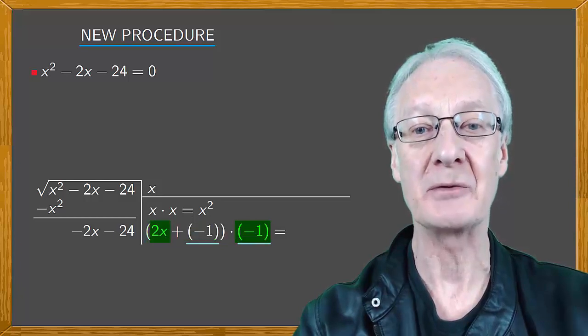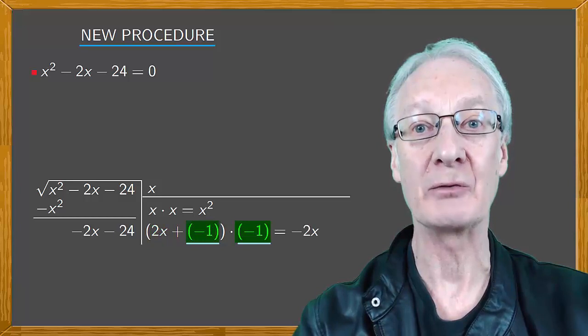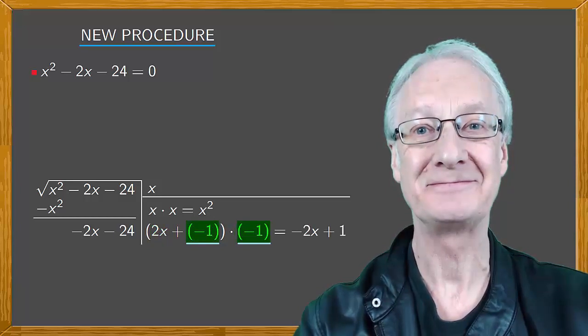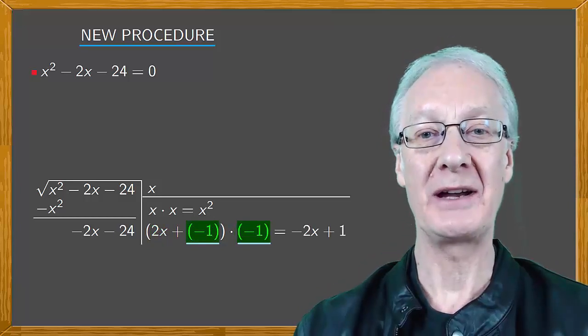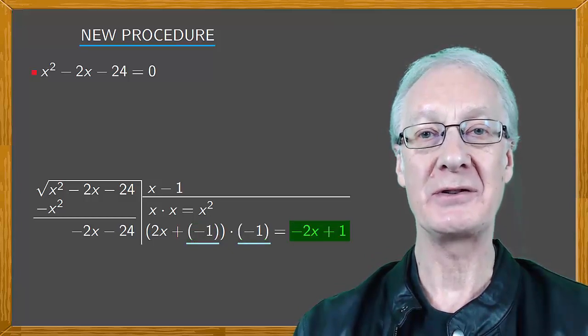Completing the operation, 2x times minus 1 is minus 2x, and minus 1 times minus 1 plus 1. We put the minus 1 on the top line, and the result with the sign changed to x minus 1 on the left side.